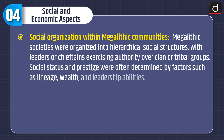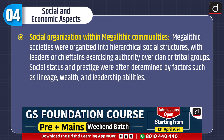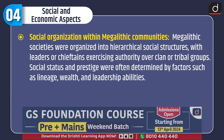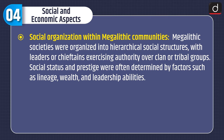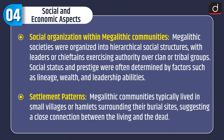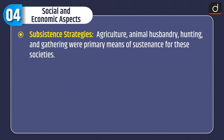Now let's have a look at social and economic aspects. Social organization within megalithic communities: megalithic societies were organized into hierarchical social structures, with leaders or chieftains exercising authority over clan or tribal groups. Social status and prestige were often determined by factors such as lineage, wealth, and leadership abilities. Megalithic communities typically lived in small villages or hamlets surrounding their burial sites, suggesting a close connection between the living and the dead. Agriculture, animal husbandry, hunting, and gathering were primary means of sustenance for these societies.